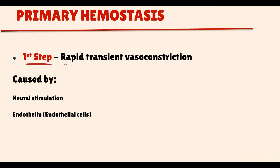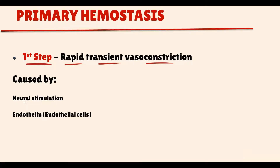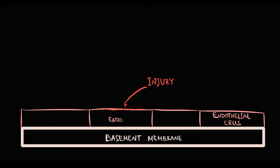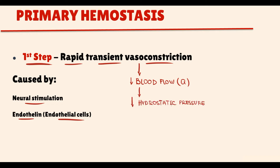The first step in primary hemostasis is rapid transient vasoconstriction. When damage to endothelial cells occurs and the inner lining of the blood vessel becomes disrupted, the blood vessel rapidly constricts. Transient vasoconstriction is caused by a combination of factors: neural stimulation, and endothelin that is contained inside the endothelial cells and released into the blood, causing local vasoconstriction. The logic of vasoconstriction is that it decreases blood flow to the damaged region, thereby decreasing hydrostatic pressure on the blood vessel wall and preventing rupture — it is essentially an emergency option.